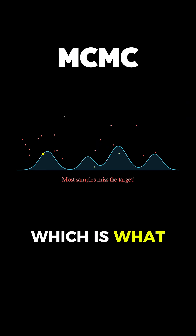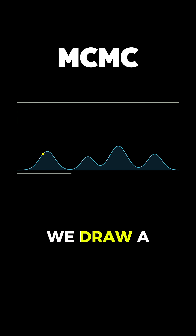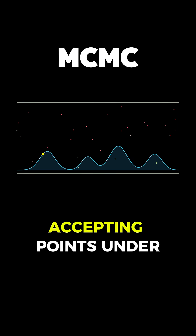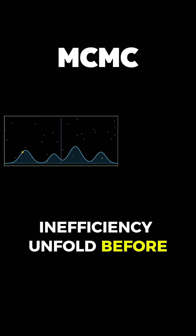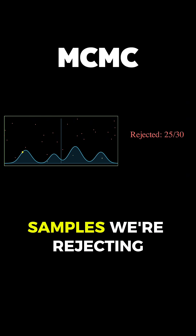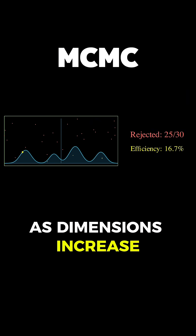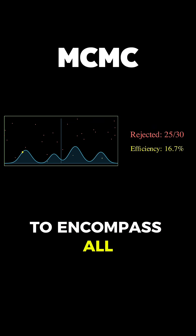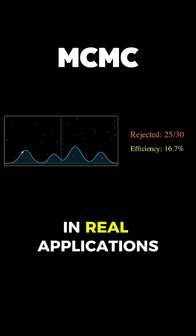Accept-reject sampling, which is what you're seeing now with this bounding box approach, seems logical at first. We draw a box around our target distribution and randomly sample within it, accepting points under the curve and rejecting those above. But watch the inefficiency unfold before your eyes — out of 30 samples, we're rejecting most of them, and this gets exponentially worse as dimensions increase or distributions become more complex, because that green box needs to grow larger and larger to encompass all the peaks, leading to acceptance rates that drop to less than 1% in real applications.